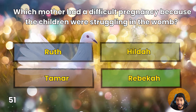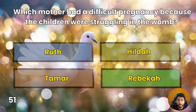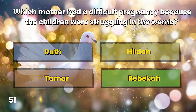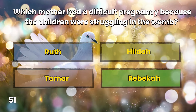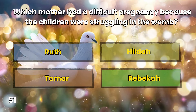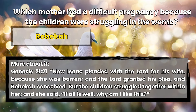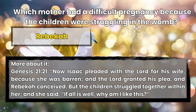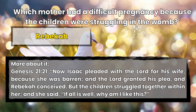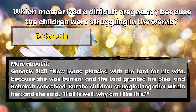Question 51: Which mother had a difficult pregnancy because the children were struggling in the womb? Ruth, Hilda, Tamar, or Rebekah? Rebekah. Genesis 25:21 — Now Isaac pleaded with the Lord for his wife, because she was barren, and the Lord granted his plea, and Rebekah conceived, but the children struggled together within her. And she said, 'If all is well, why am I like this?'